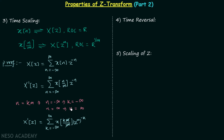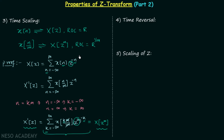Comparing this with the original Z transform definition, in place of n we have k, and in place of Z we have Z^m. Therefore, X'(z) = X(z^m), and we have proved this property. Now we will move on to the fourth property, which is the time reversal property.